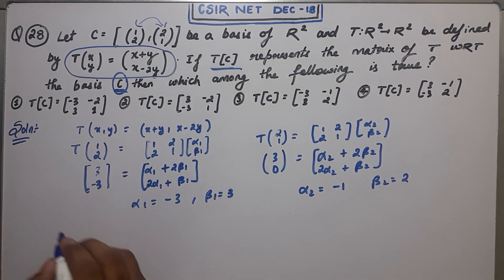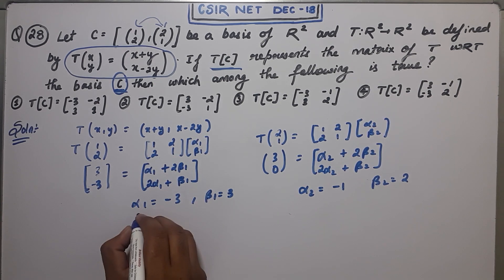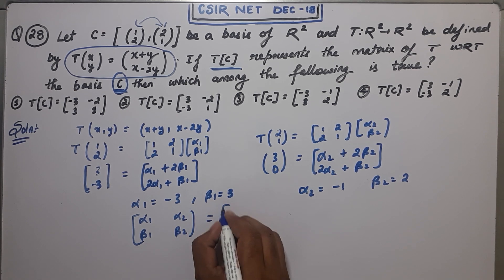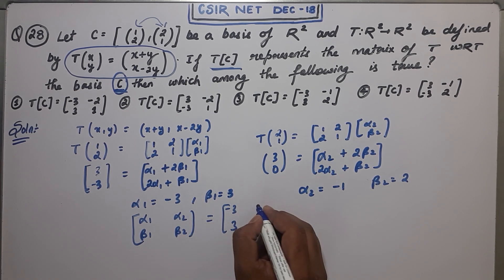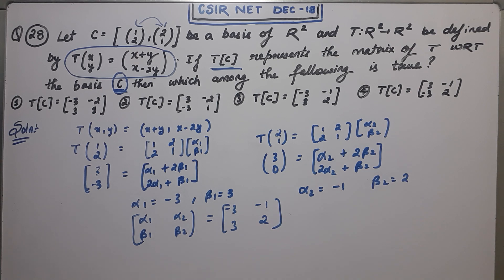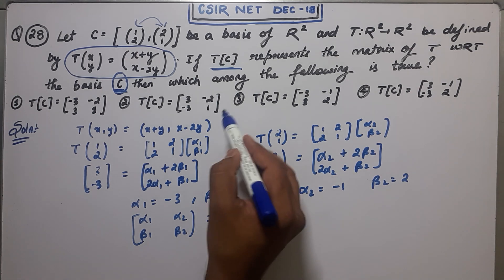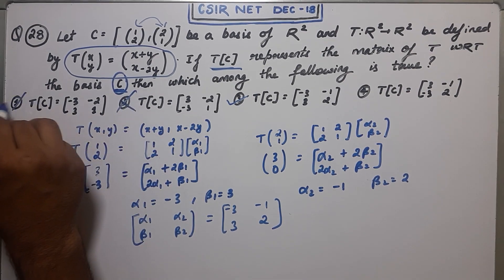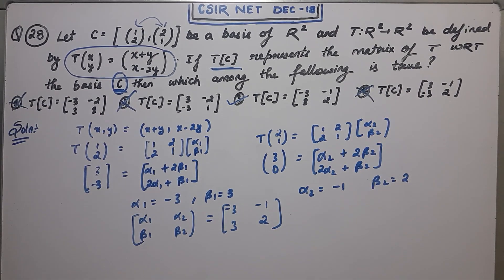So the required matrix of the given transformation will be alpha 1, beta 1, alpha 2, beta 2. And that is given by [-3, 3; -1, 2]. So it is a very easy question. You can directly mark the third as your answer and all other options are false. Thank you guys.